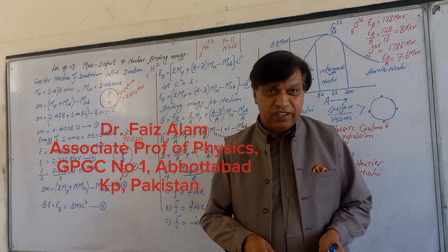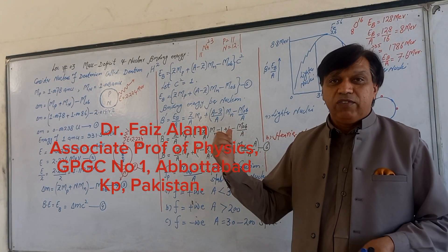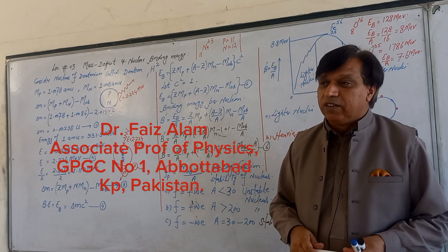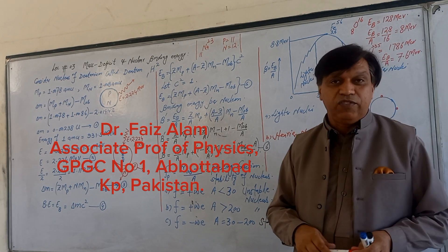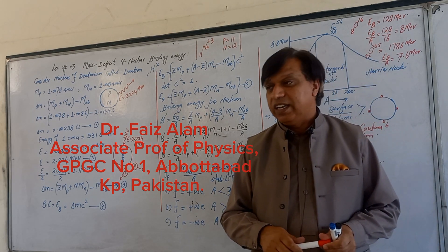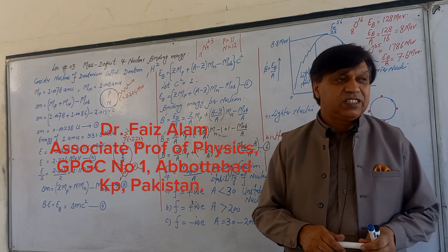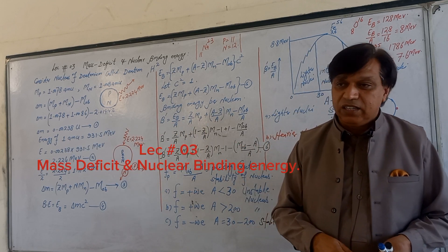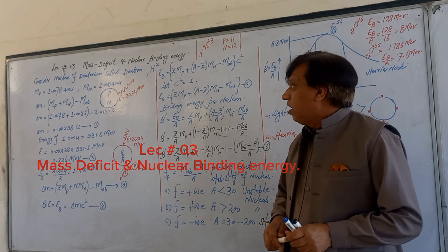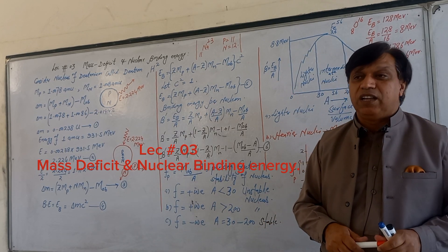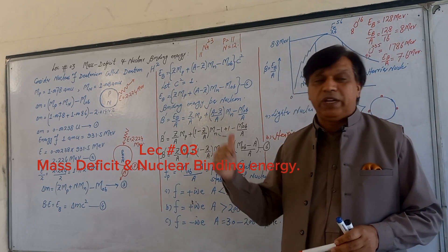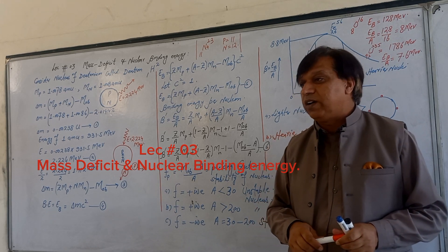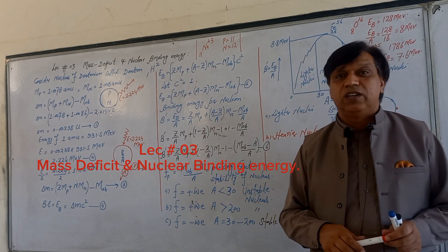Bismillah ar-Rahman ar-Rahim. As-salamu alaykum dear student. Today we are going to study the third lecture of your nuclear physics course, which is about mass deficit and nuclear binding energy. The concept of mass deficit is sometimes also called mass defect, while nuclear binding energy remains as it is. To explain this term, let us consider an example of the second isotope of hydrogen, which is deuterium.